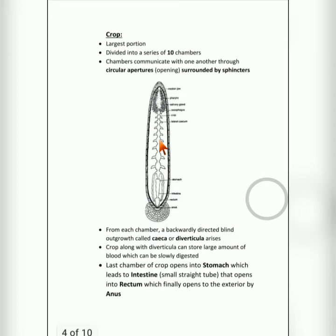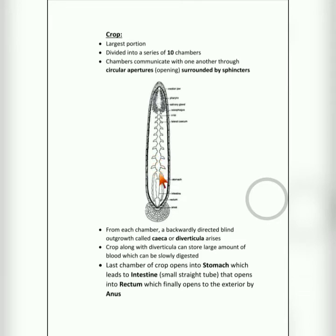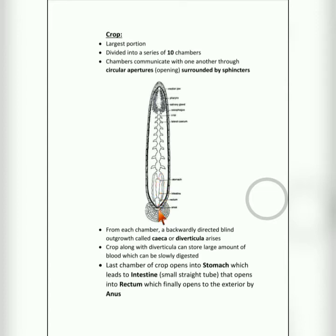From each chamber, a backwardly directed blind outgrowth called a caeca is seen. Each chamber has two crop diverticula — one on each side — which are these backwardly directed blind outgrowths. They are called blind outgrowths because they start from the crop and are not connected to anywhere else. These caeca can store a large amount of blood, which is slowly digested. The last chamber of the crop opens to the stomach, which then leads to the intestine, rectum, and anus.